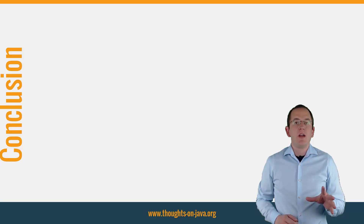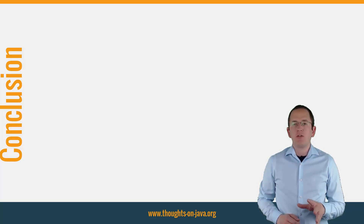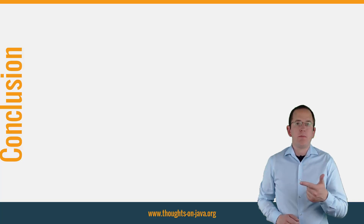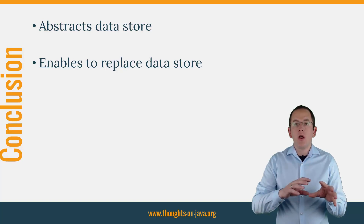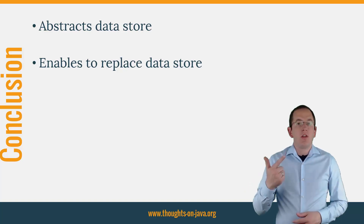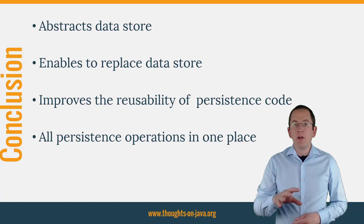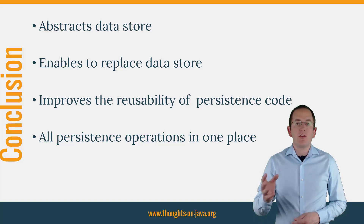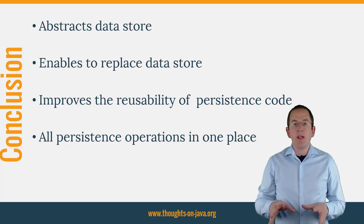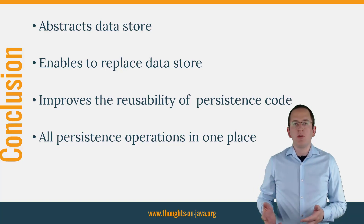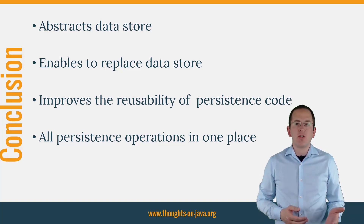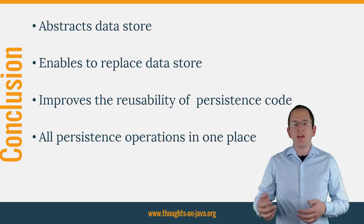Let's quickly summarize this video. The repository pattern is one of the most popular Java persistence patterns. It provides two main benefits. The pattern abstracts the datastore and enables you to replace your datastore without changing your business code. The repository pattern also improves the reusability of your persistence code, especially your queries, by encouraging you to implement all persistence operations in one place. That makes them easy to find and to reuse. The implementation of the repository pattern is relatively simple. You need an interface that defines the persistence operations on a logical level. This interface gets implemented by one or more datastore-specific classes.